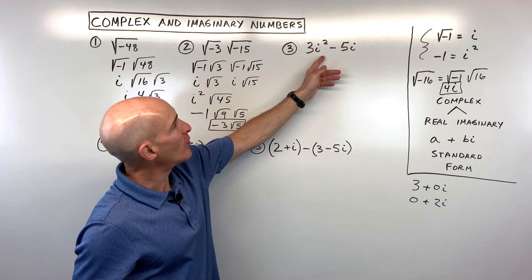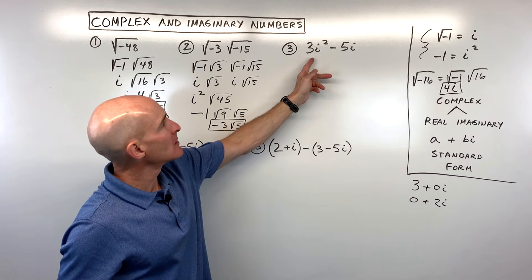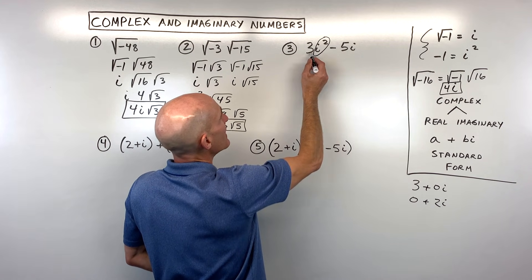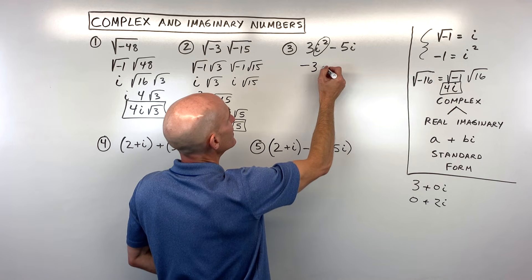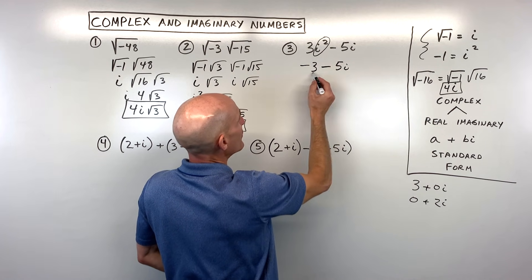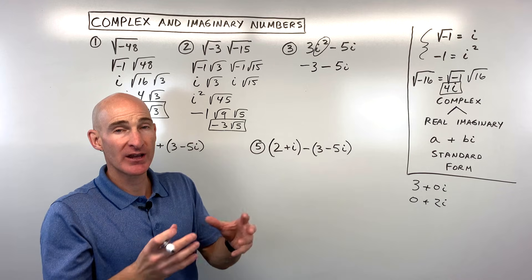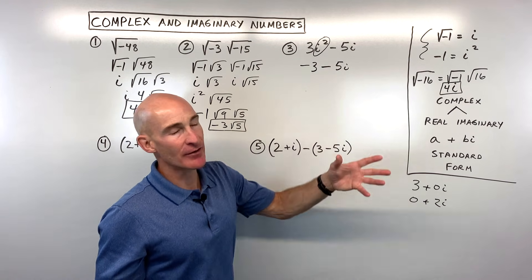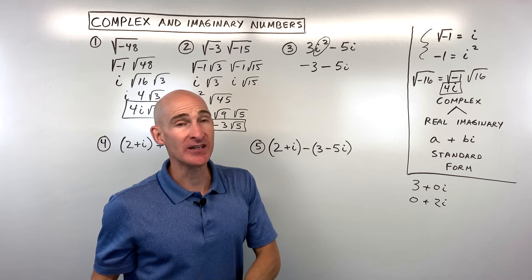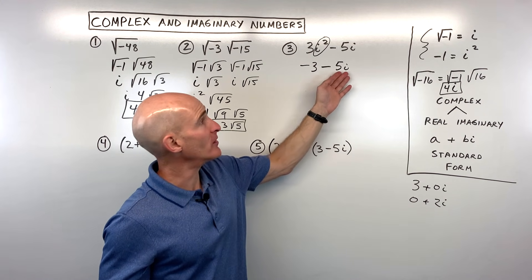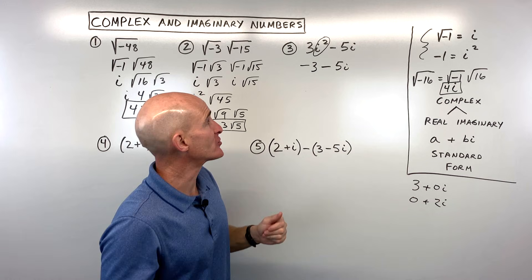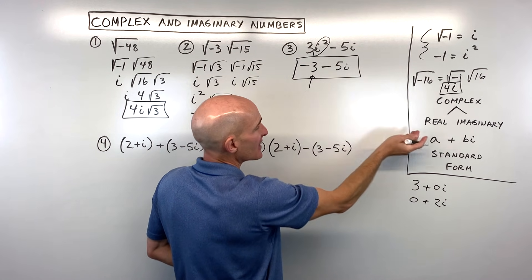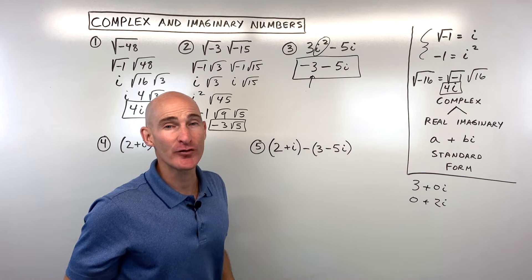For example three, we can see we have i squared in the expression. Since i squared is negative one, multiplying by three gives us negative three, so we get negative three minus five i. We can't combine these because you've got an imaginary and a real number — they're unlike terms. Think of i like a variable such as x or y; you can't combine a number with a variable when just adding or subtracting unlike terms.